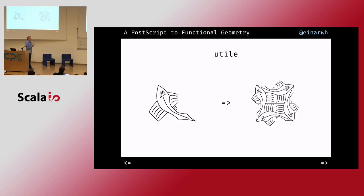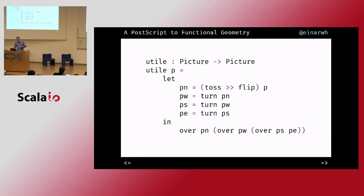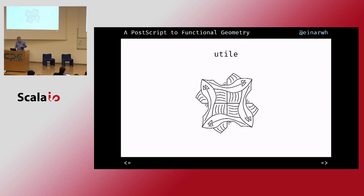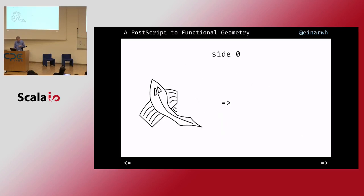Another basic building block is the u-tile — it also fits nicely with itself. This is also just simple transformations: toss and flip, then turn in various degrees. That gives us the u-tile. With these building blocks, we have enough to do the recursion itself.